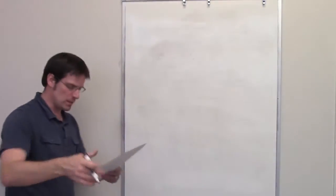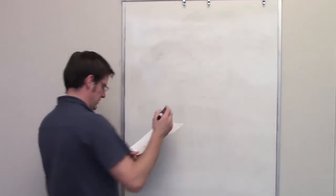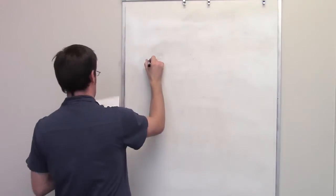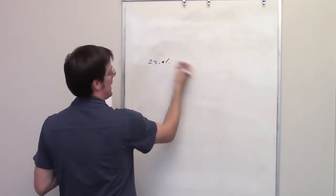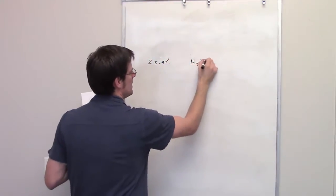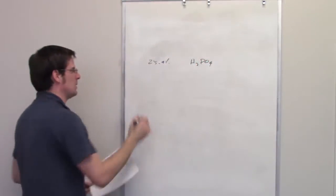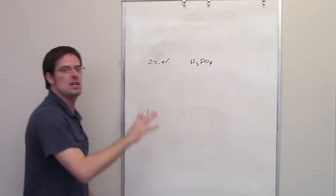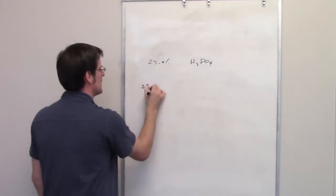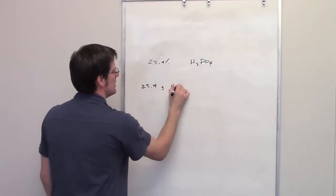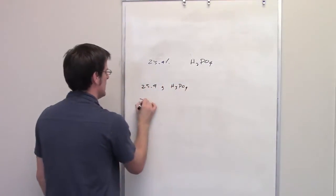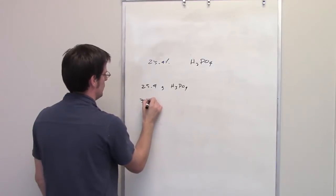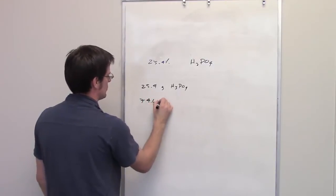All right, in this question we're asked to determine the mole fraction of a solution of 25.4% by mass phosphoric acid. As we saw in our previous example, if I had 100 grams of such a solution, it would be 25.4 grams of phosphoric acid and 74.6 grams water.